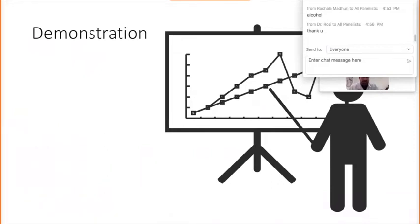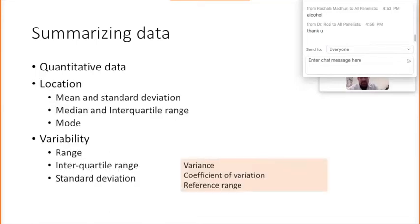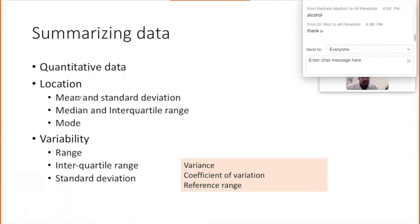Getting back to the slides — let's look more at how we summarize quantitative data. When summarizing quantitative data, there are two important elements: one is location and the second is variability. Location is nothing but the measure of where the data is centered. As you may already be familiar with, those three terms we often talk about are mean, median, and mode — those are the ways of summarizing quantitative continuous data.